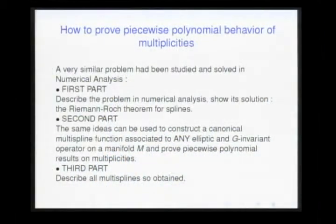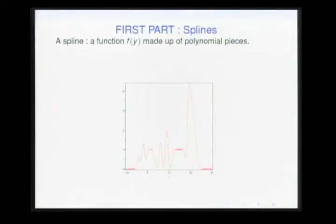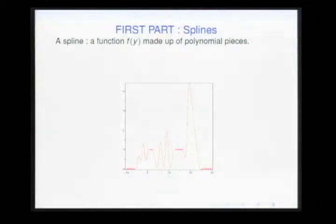Another example of a quasi-polynomial function: take the highest-weight representation with highest weight lambda of a compact group K with maximal torus T, and look at the function mapping lambda to the dimension of the zero-weight space. This is again a locally quasi-polynomial function — you must divide the cones of dominant weights into subcones and write this function as polynomials on subsets of those cones. The same holds for Clebsch–Gordan coefficients, so we encounter quasi-polynomial functions all the time.